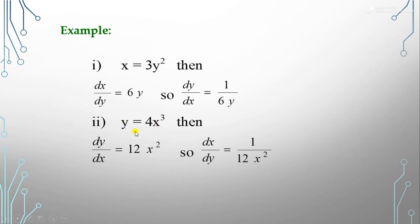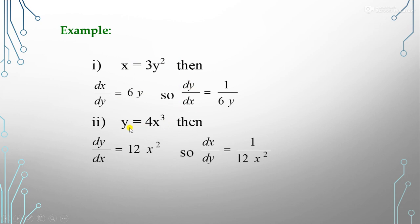Similarly, given y = 4x³, find dx/dy. Since y is given in terms of x, we differentiate dy/dx = 12x². Then by the inverse function rule, dx/dy = 1 / (dy/dx) = 1/(12x²). So if the function is given as y in terms of x, we use the inverse function rule to find dx/dy.